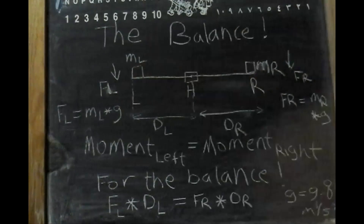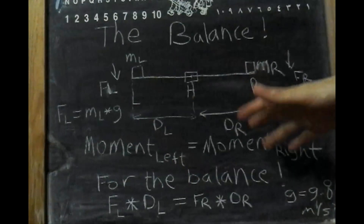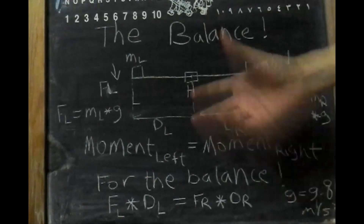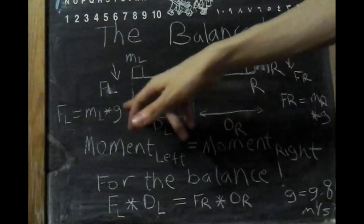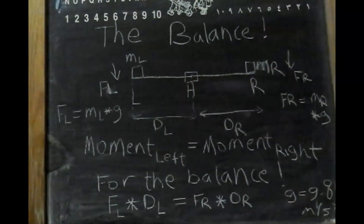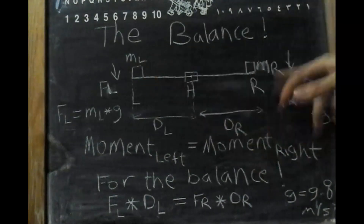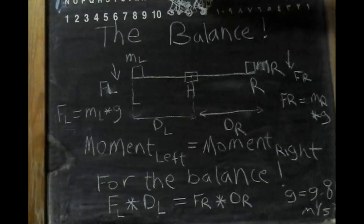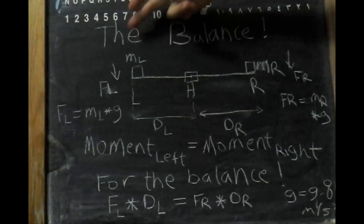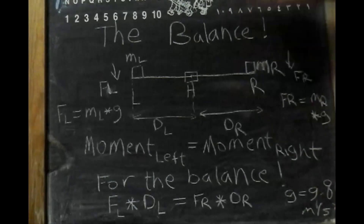Balance occurs when the moment at the left is equal to the moment at the right. The moment is the force multiplied by the distance. Each mass has a weight, and the weight is equal to the mass multiplied by 9.8 or 9.81 meters per second squared. This is called gravity.